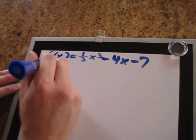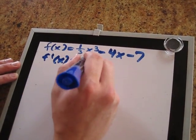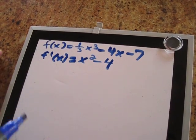So the first thing we need to do is take the derivative of this function, f prime of x, which is x squared minus 4.